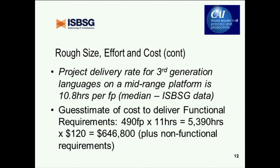Having estimated roughly how big the system was, we looked at the ISBSG data. The project delivery rate for a third-generation language on a mid-range platform is about 11 hours per function point — that's the median, the middle figure in the data set. Our guesstimate was to multiply the 490 function points by 11 hours, then multiply by a rough figure of $120 an hour, and all of a sudden we had a system that was going to cost about $650,000 plus any additional non-functional requirements. So the customer had for the first time an idea of how big this thing was — and it gave them a surprise and a bit of a fright.